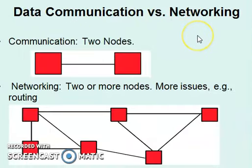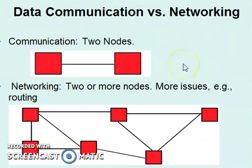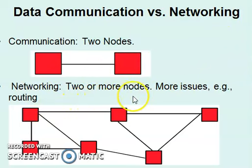Now looking at data communication versus networking: communication can be between two nodes, but for networking you need two or more nodes. Networking also has additional issues of routing and addressing which must be catered for.